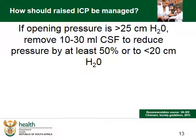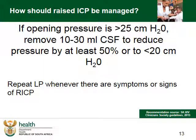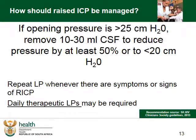How much fluid should be removed? Here is a simple guide: if the opening pressure is more than 25 centimeters of water, remove 10 to 30 mL of CSF to reduce the pressure by at least 50% or to less than 20 centimeters of water. Importantly, repeat the lumbar puncture whenever there are signs and symptoms of raised intracranial pressure — some patients may need daily LPs to keep symptoms under control. Tapping CSF in patients with increased pressure is more effective than analgesia; the patient feels better and it has been shown to improve prognosis.